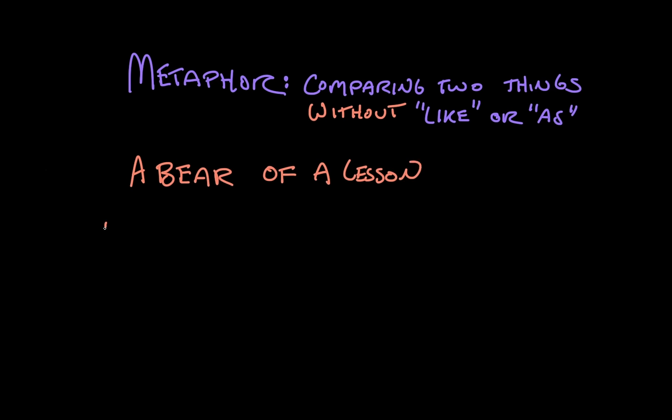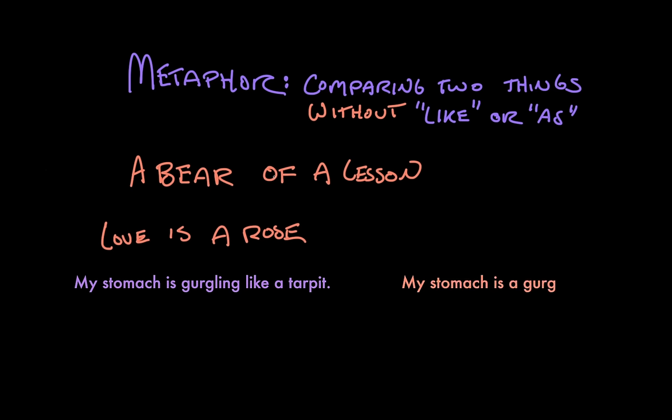There's a Linda Ronstadt country song from the 70s called 'Love is a Rose,' which is all about how to take care of a relationship through the metaphor of tending a flower with thorns on it. The difference between 'my stomach is gurgling like a tar pit' and 'my stomach is a gurgling tar pit' is the difference between simile and metaphor.